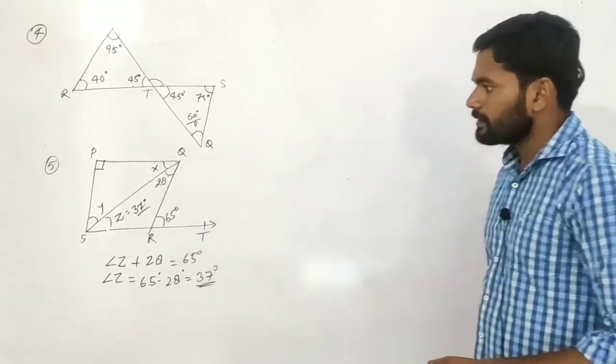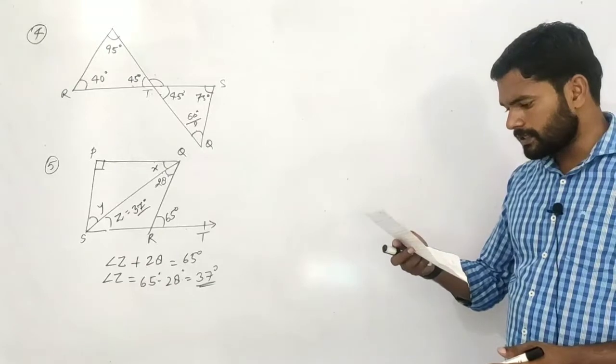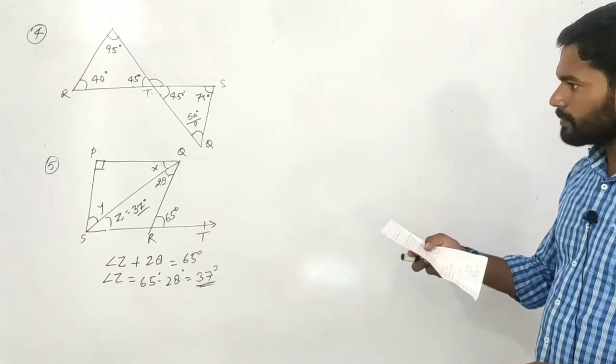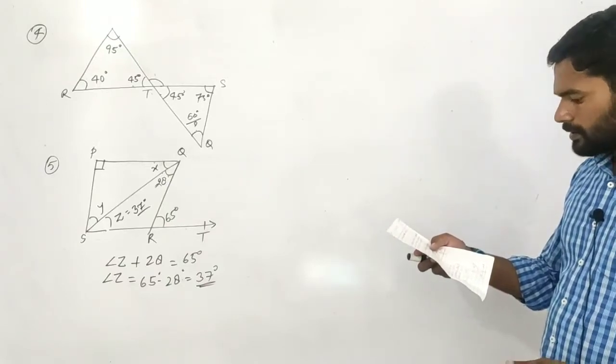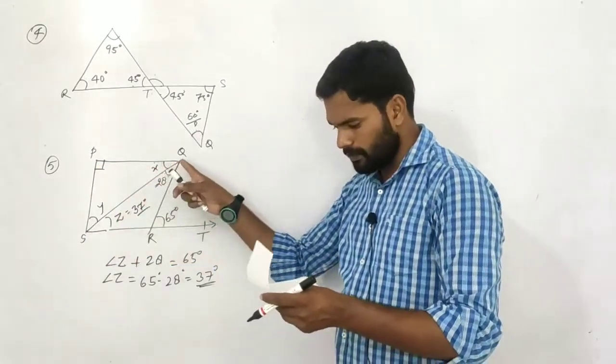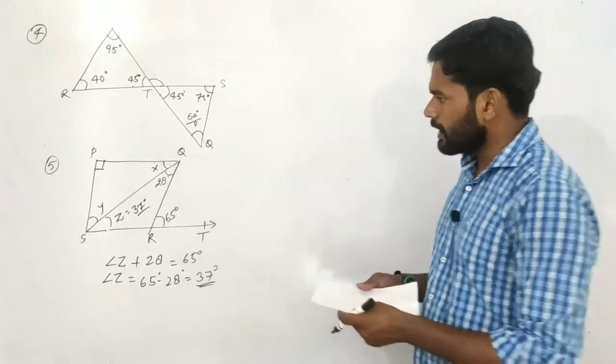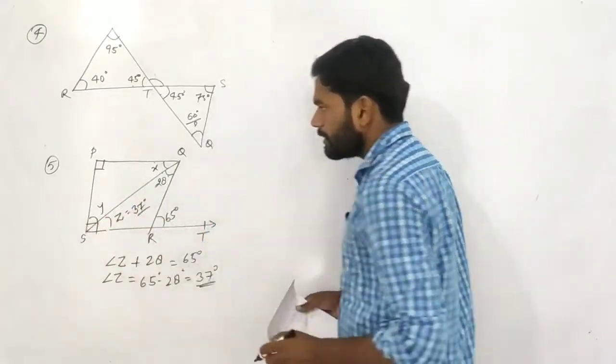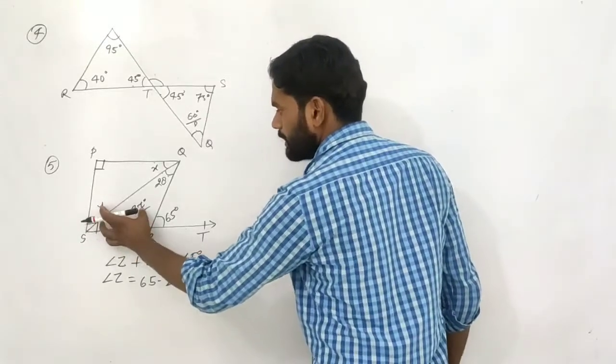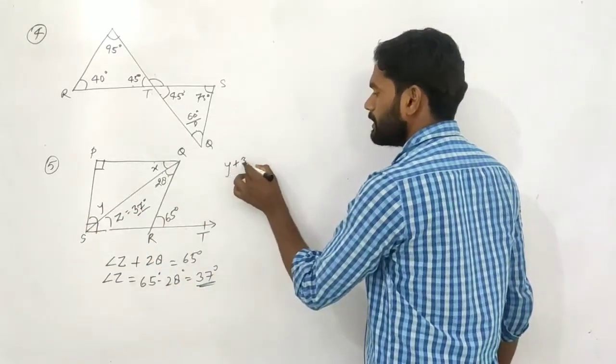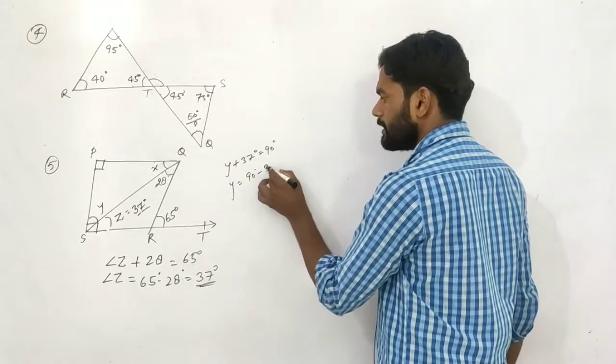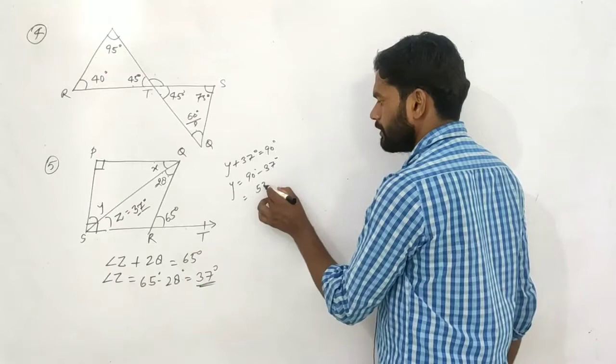Now, PQ is perpendicular to PS and PQ is also perpendicular to SR. Since SR is perpendicular, we get 90 degrees. So 90 degrees, the sum of y and 37 equals 90 degrees, and y equals 90 minus 37 equals 53 degrees.